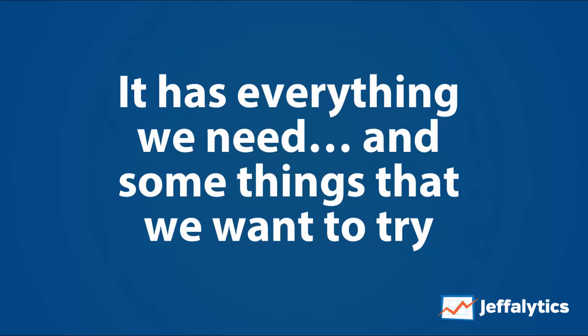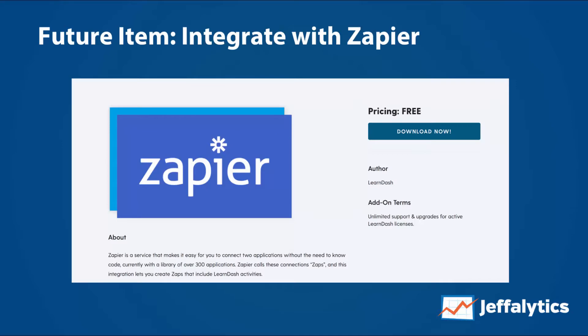At this point LearnDash has everything that we need, and some things we want to start trying out in 2018. The first is integration with Zapier. What I'd like to do is make it so that whenever somebody completes a task within LearnDash, I want to send it to Zapier so we can either send them an email or keep track of how far along they are in the course. If we integrate with Zapier, we can send user data into our database, into our email marketing platform Drip — we can do whatever we want based on a trigger happening within LearnDash.